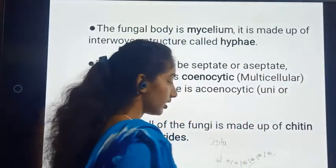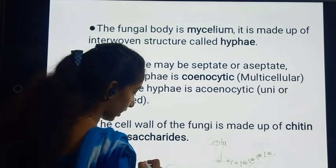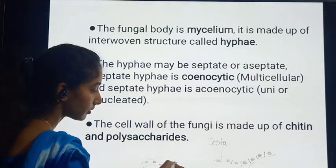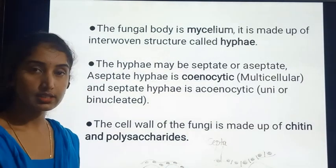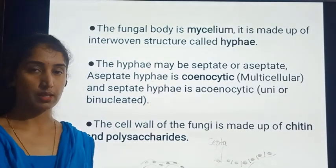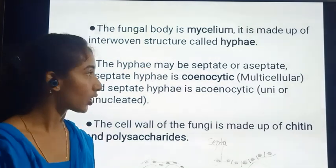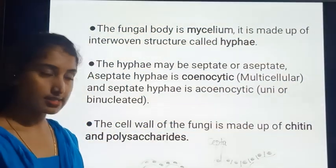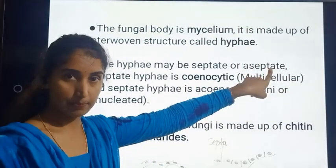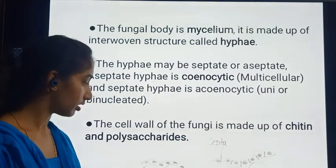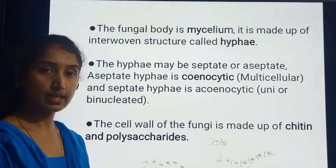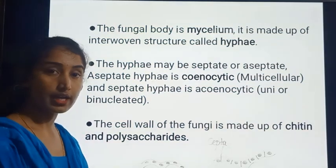In aseptate hyphae, there are also many nuclei present, but the septa or cross walls are absent. There is absence of cross walls in the hyphae, so we call them aseptate. Since there is no septa, the nuclei are randomly and continuously arranged, and they show a multi-nucleate-like condition.